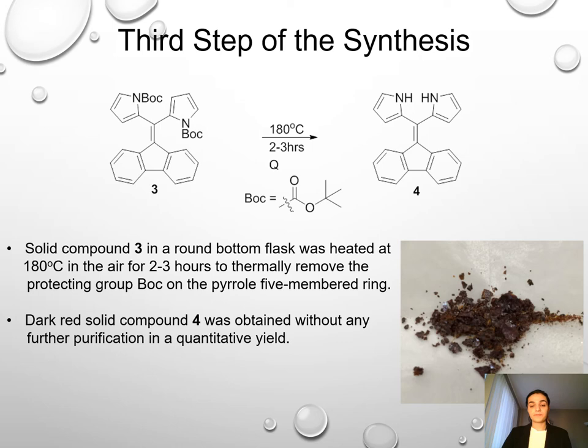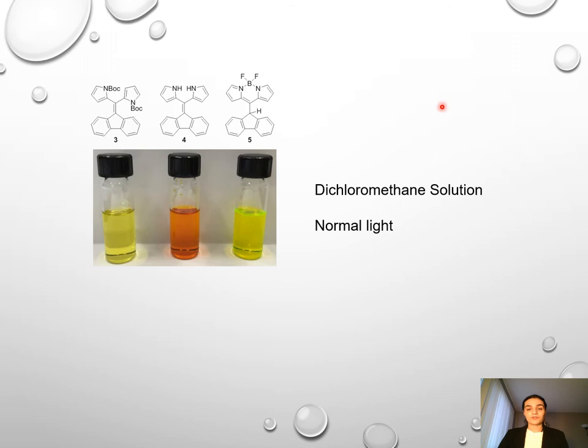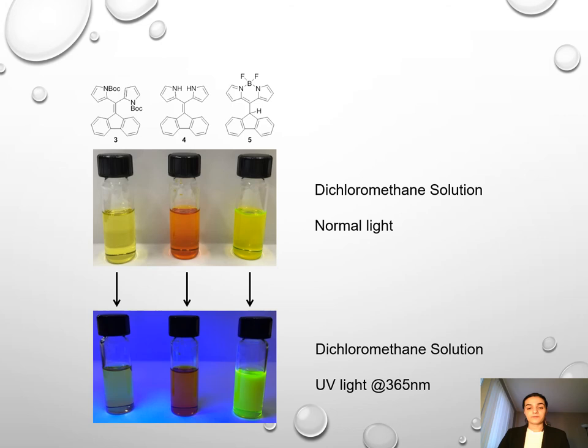In our final step, we took compound 4 and tried our original plan but it didn't work out. Instead, we got compound 5, and the reaction yield was improved to 87 percent by extending reaction time to three days. Compounds 3, 4, and 5 were dissolved in dichloromethane solution. This is how it looks in normal light and in UV light. Compound 5 is fluorescent.